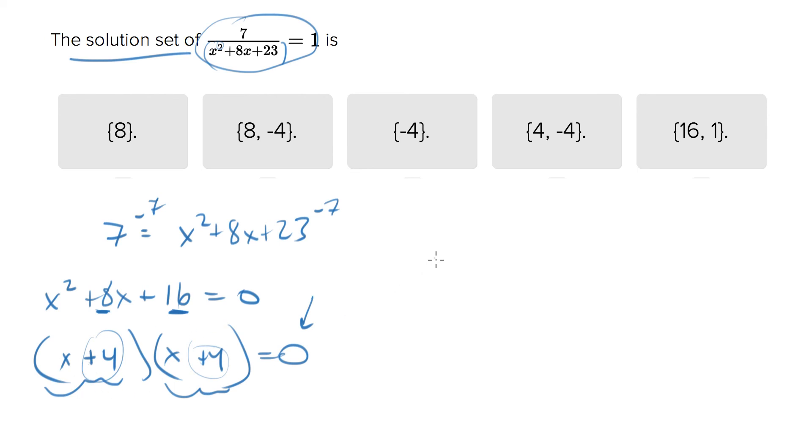Now these binomials are the same, so if x plus 4 equals 0, that means that x equals negative 4. So that is one of the solutions. The other one is the same, we don't have to solve it because it's exactly the same. We'll get the same number, so the solution set is just that one number, negative 4.